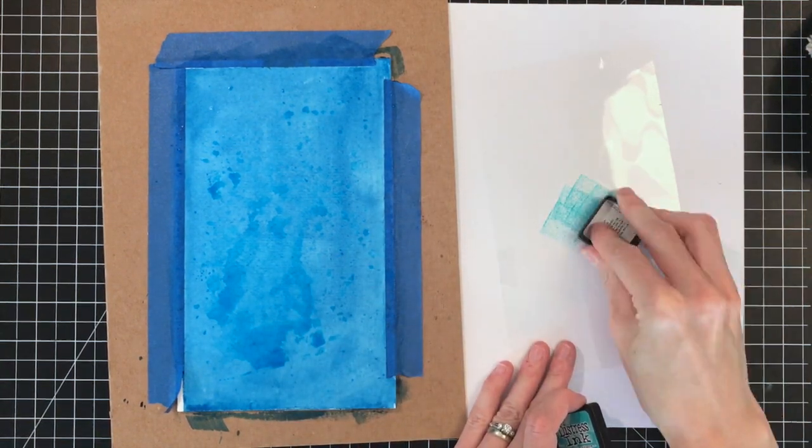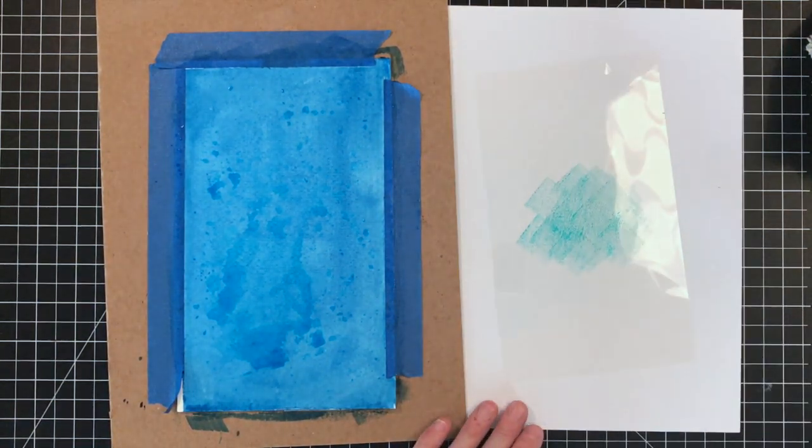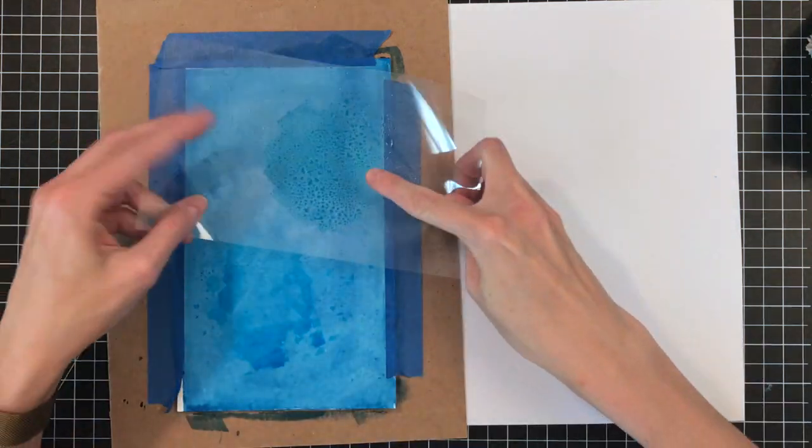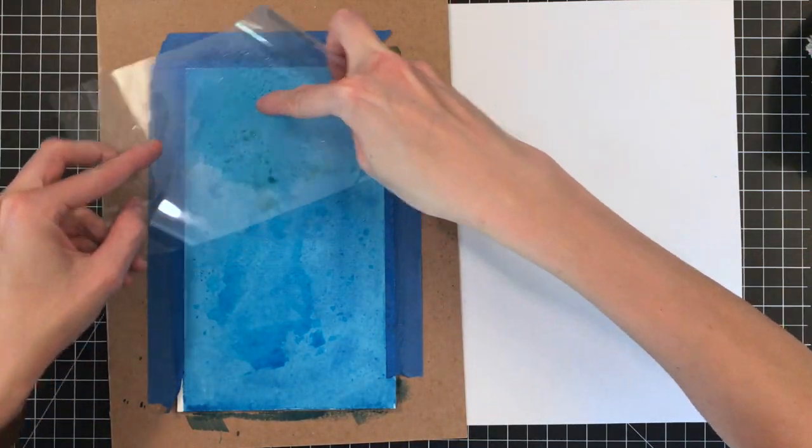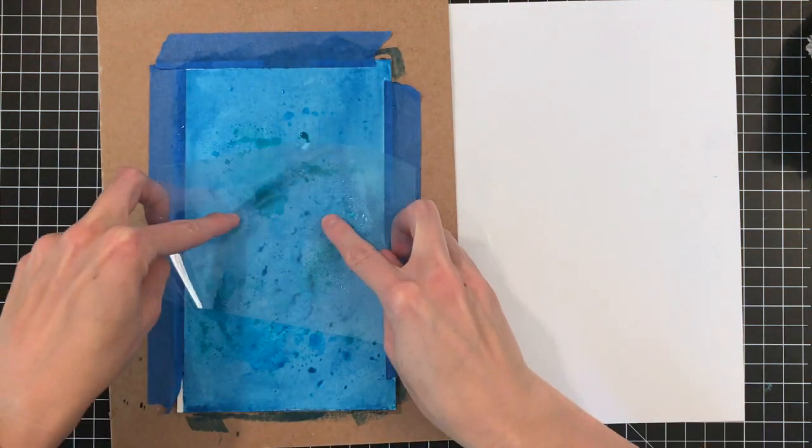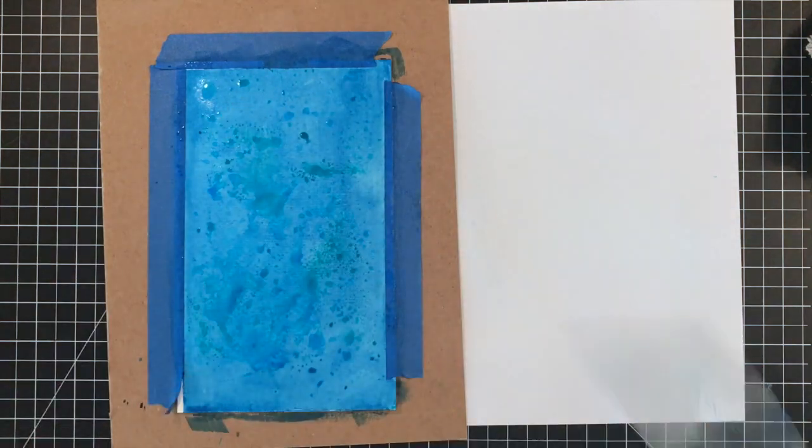Now I'm using a second color. This one is Peacock Feathers. Smushing it down onto the acetate. Then I'm just going to mist it here. So I see it beading and then smushing it down onto my paper. This will just kind of break up all that blue, give a little bit of a different color to the paper.